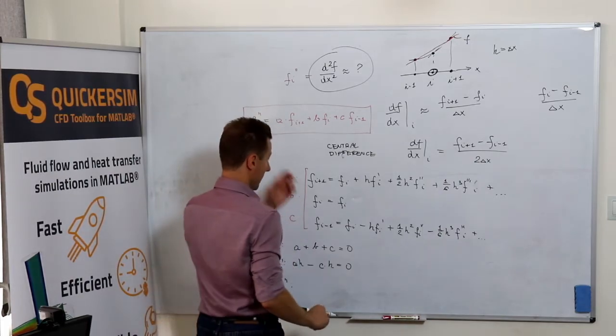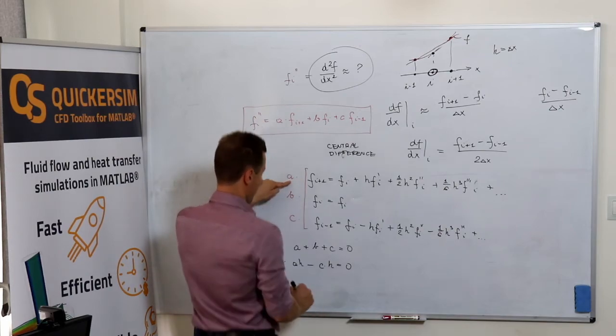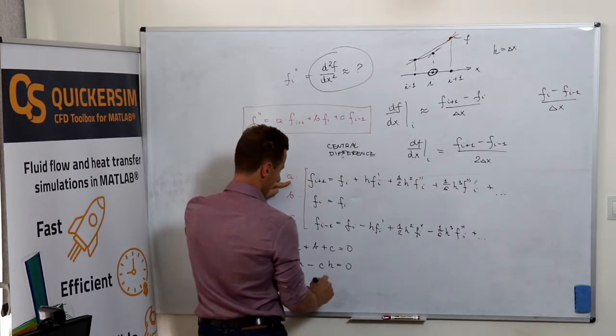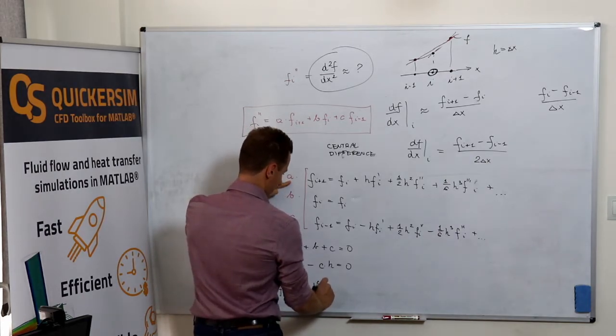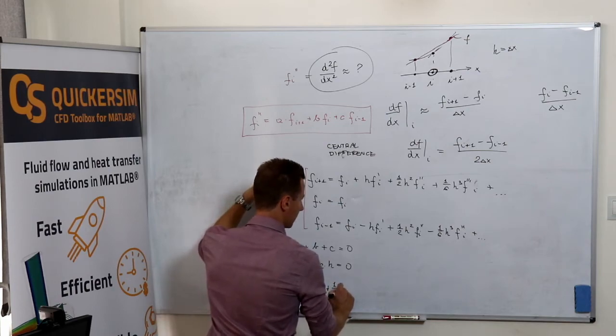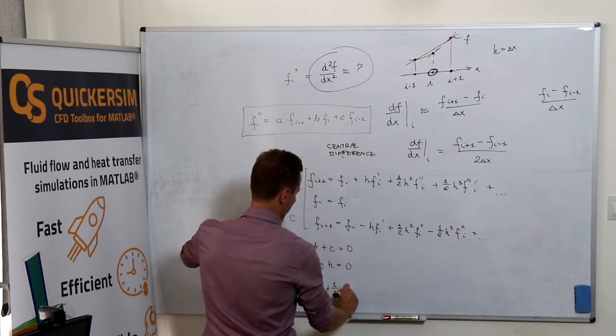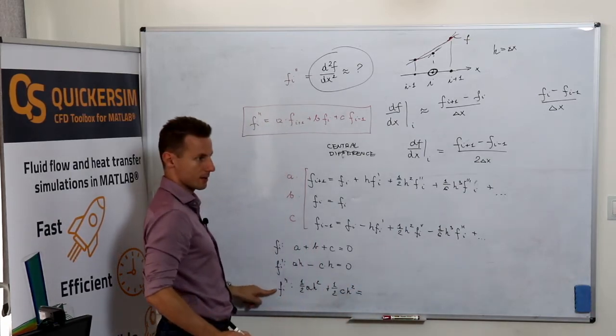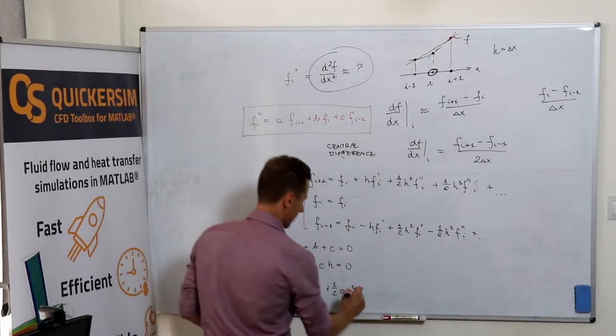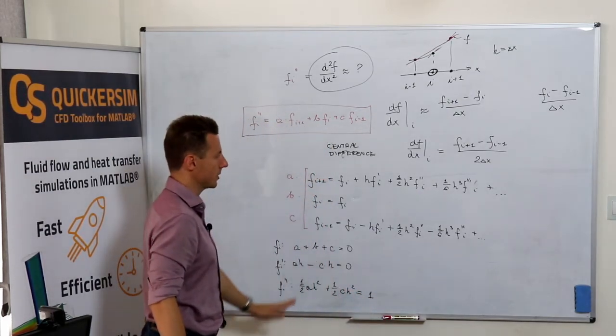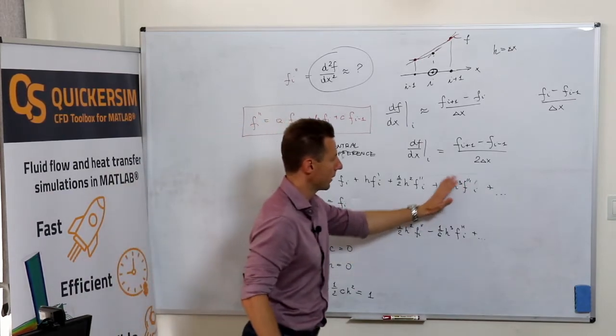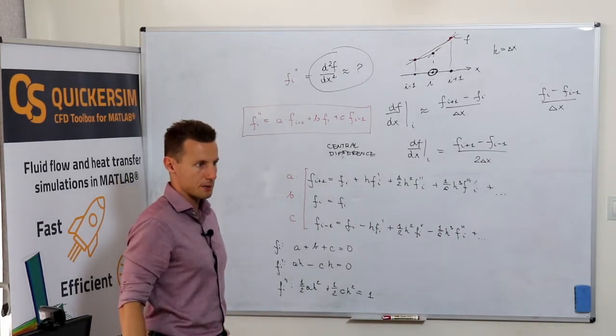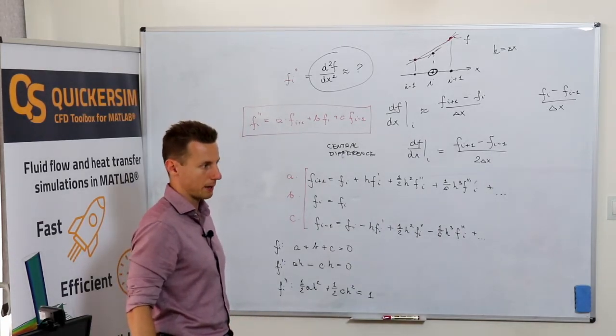For the second derivative, we have one half h squared a plus one half h squared c, and we want this to give us exactly one. We need to live with the fact that probably all terms that follow will not vanish, and this will be the error that we are making in the approximation.